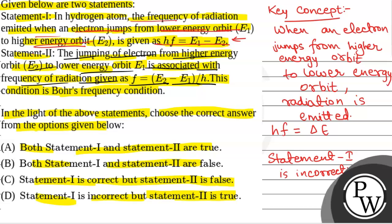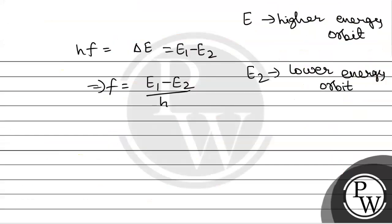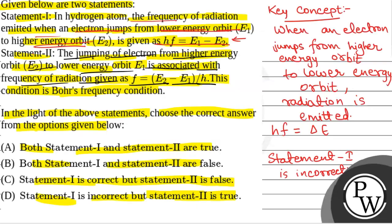This is what is given in Statement 2, and this condition is also called Bohr's frequency condition. So the correct option will be option D, that is, Statement 1 is incorrect but Statement 2 is true. This will be the final answer. Hope you all understood it well. Best of luck.